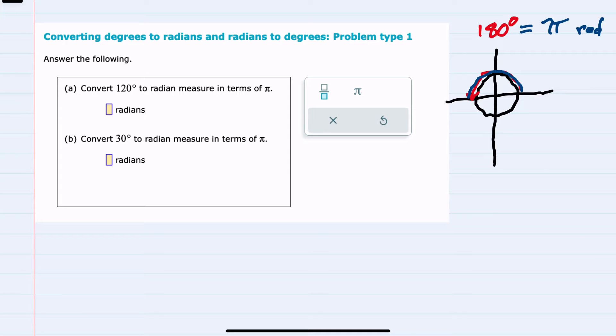With our first conversion here for A, we are starting with 120 degrees. We are trying to get radians, so I can multiply, and my conversion will always need to be a fraction that has a value of 1 because the numerator and the denominator have the same value.